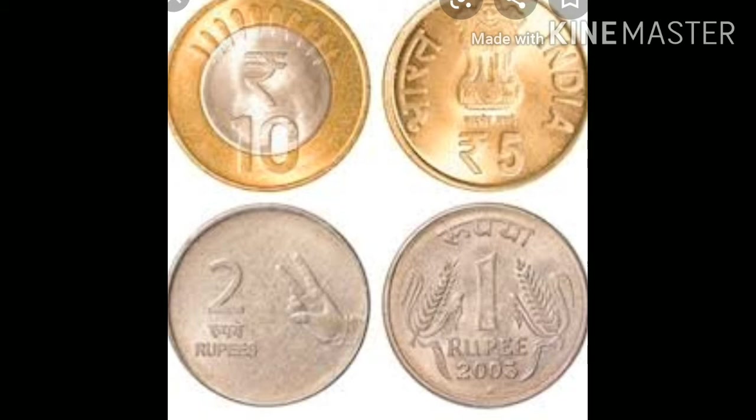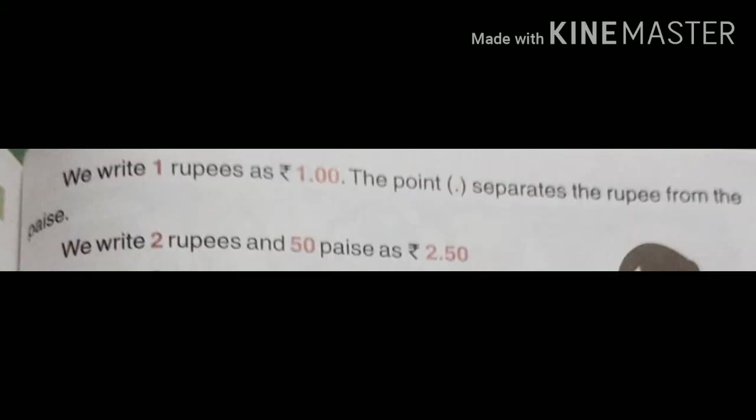Children, 100 paisa is equal to 1 rupee. If we have to write rupees and paisa together, we write 1 rupee as 1.00. This decimal point separates the rupees from the paisa.